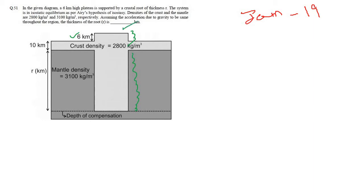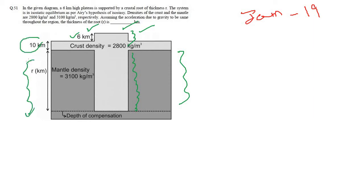We have to find out that root — the thickness of the root. Thickness means this portion: the thickness of the root required to support this height of topography according to Airy's hypothesis. The height of the topography is given as 6 kilometers, then the crust is given as 10 kilometers. We have to find out r, which is the root. Density of the crust and mantle is also given.